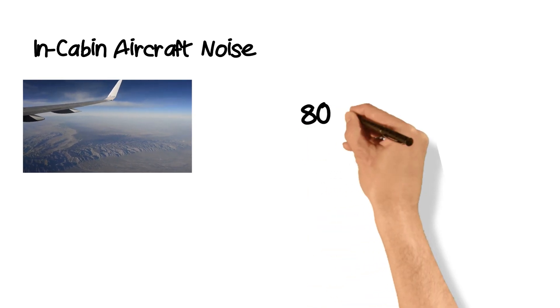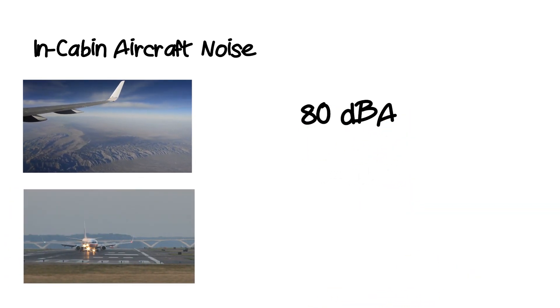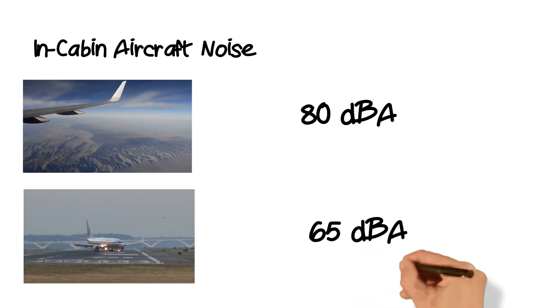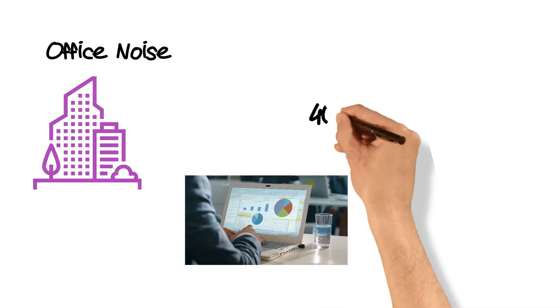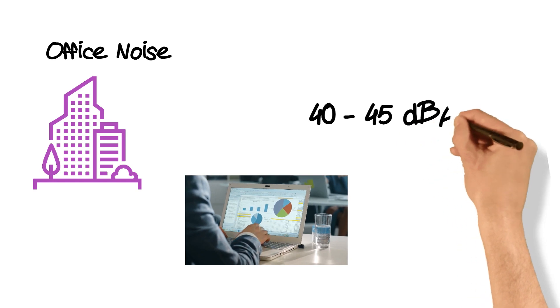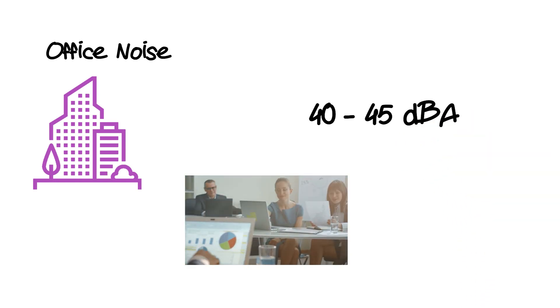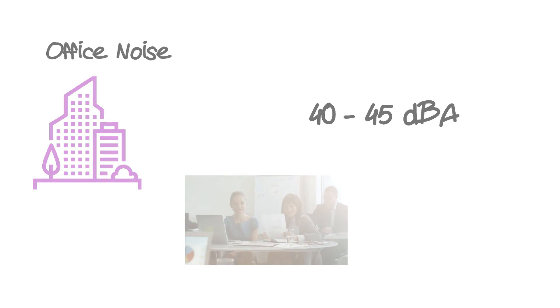During cruise, noise levels inside commercial aircraft are up to 80 decibels. During taxi, noise levels inside the cabin are up to 65 decibels. In comparison, noise levels in a typical office where communication is easy are between 40 and 45 decibels.